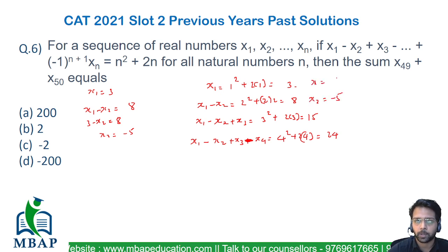x1 I got as 3. Now x1 minus x2 plus x3 is equal to 15. x1 minus x2 has already been given to me as 8. So the question says 8 plus x3 will be equal to 15. So the value of x3 obviously will be equal to 7.